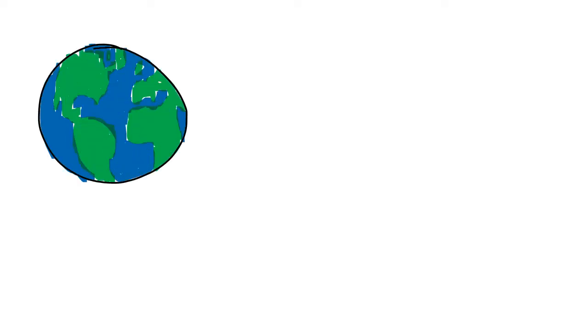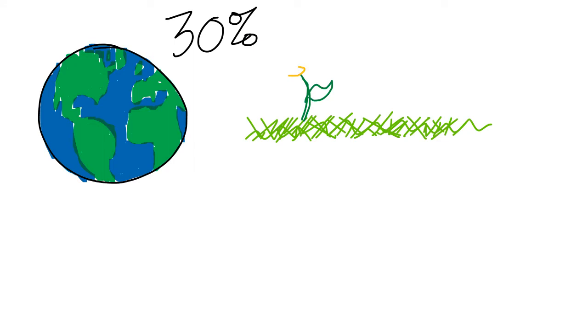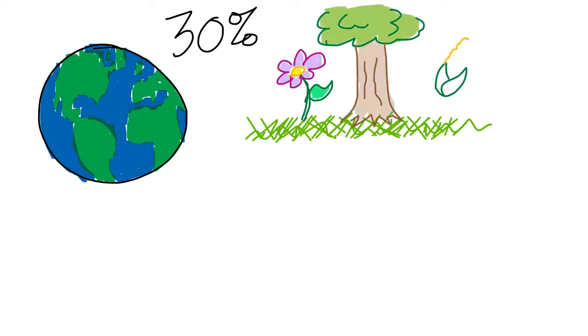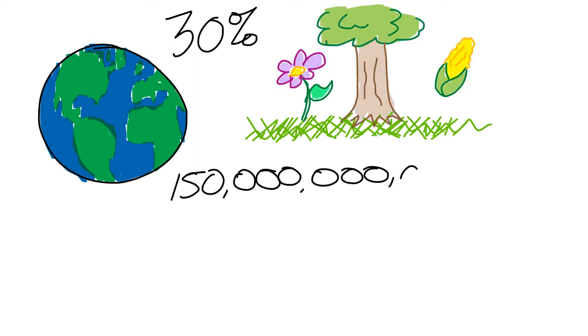Lignin is one of the most abundant materials found on Earth, and it comprises nearly 30% of all plant mass. Currently, there is an estimated 150 billion tons of lignin on Earth.